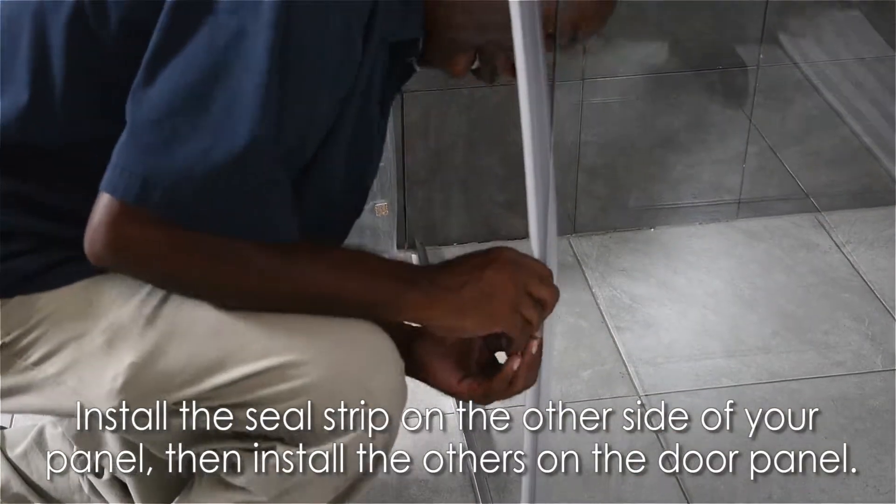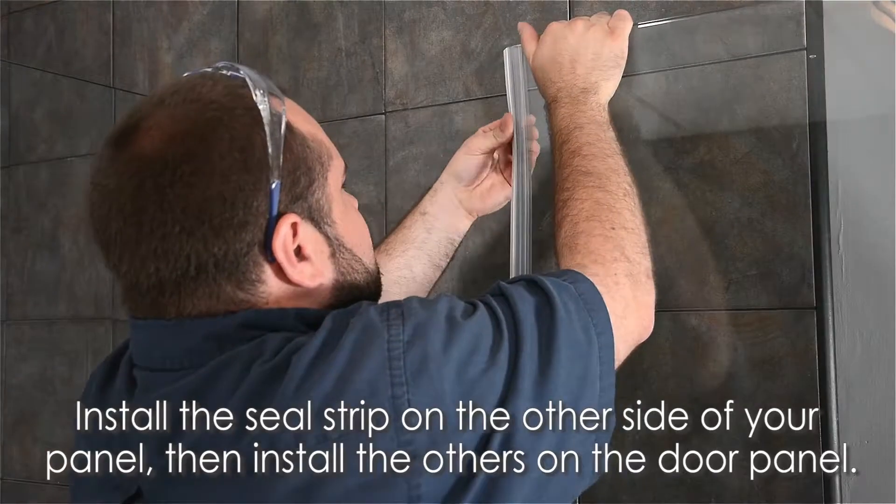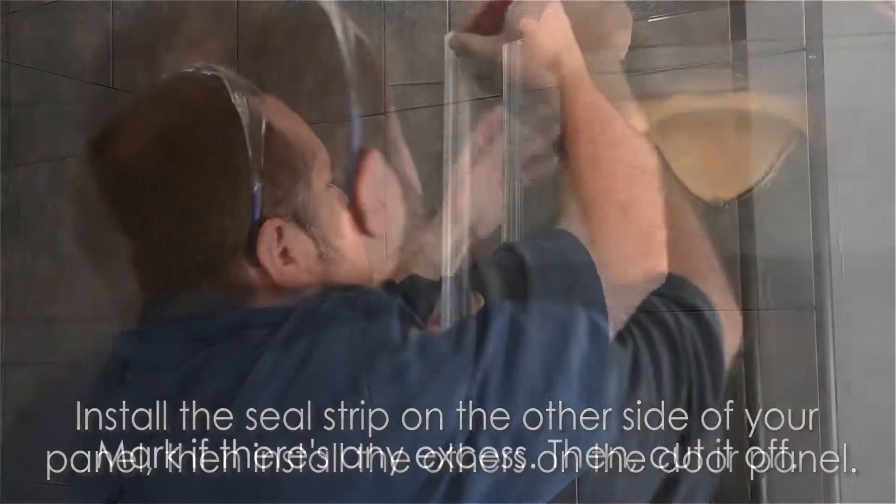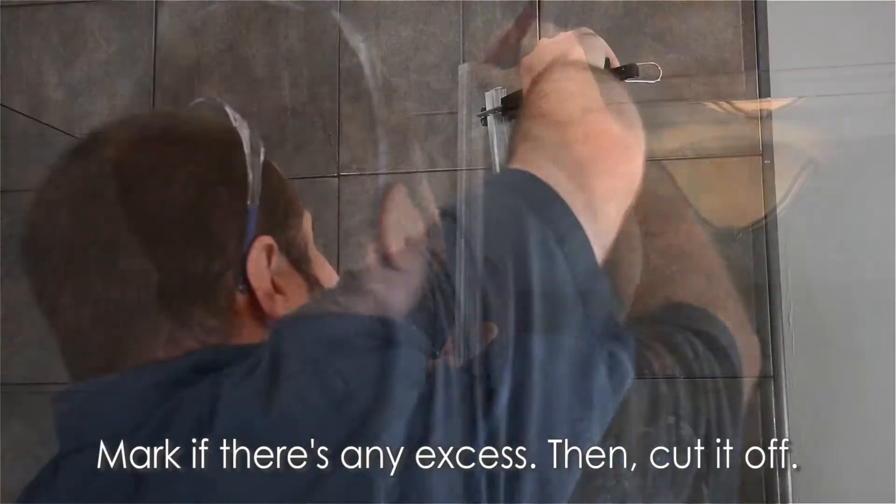Install the seal strip on the other side of your panel, then install the ones on the door panel. Mark if there's any excess, then cut it off.